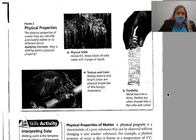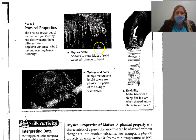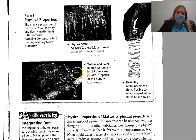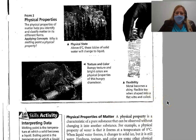A physical property of matter can help you identify and classify matter in its different forms. For example, ice above zero degrees C will change from a solid to a liquid. Texture and color — bumpy texture and bright colors are physical properties of a chameleon. Flexibility — metal becomes a shiny flexible toy when shaped into a flat wire and coiled.